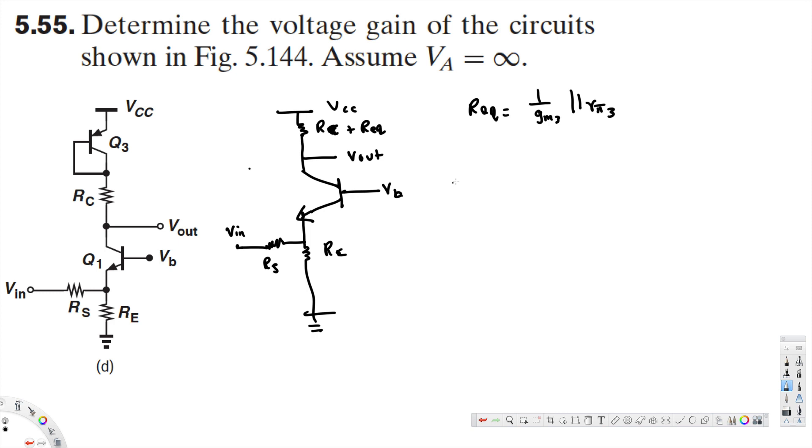Now the voltage gain AV equals Vout over VB times VB over VIN, and that is equivalent to